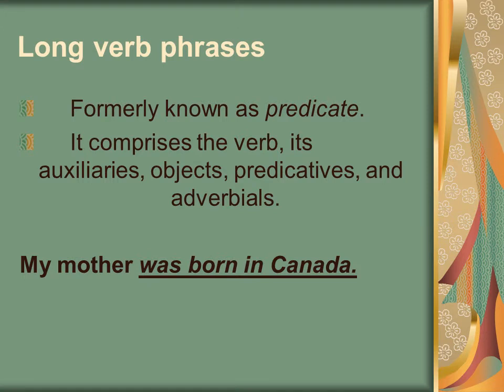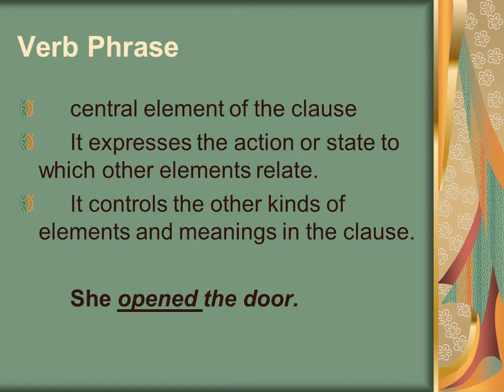Something called the long verb phrase, which had at one point been called the predicate, is the verb as well as everything that goes after it — the auxiliaries, the objects, predicatives, and adverbials. But what we're looking at when we talk about a verb phrase is the main action that's going on, and it really controls a lot about what will be in that clause.